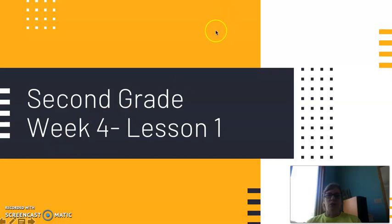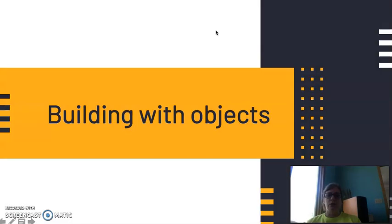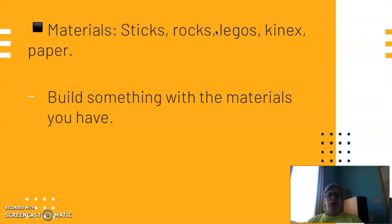So for this week's lesson, we are going to be doing some building with different objects, and to do your building, you can pick whatever materials you have around your home. So that could be sticks, rocks, Legos, Kinects, paper, whatever looks like it would be good to use for building. And those can be things from inside, or if you can get an adult to go outside with you to get some of those materials, that would work just as well.